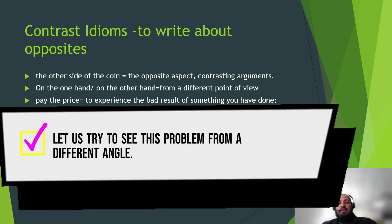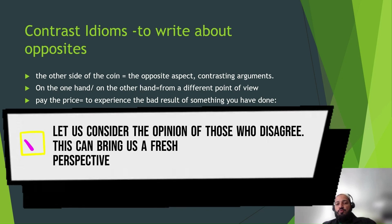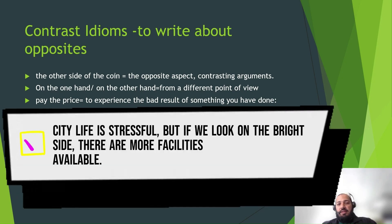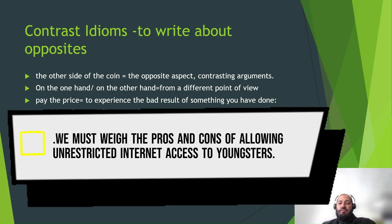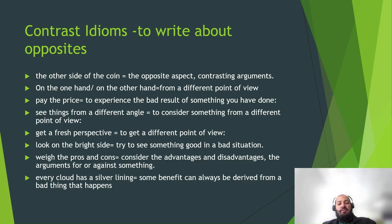'See things from a different angle' means to consider a different point of view — 'let us try to see this problem from a different angle.' Related is 'get a fresh perspective' — for example: 'Let us consider the opinion of those who disagree; this can bring us a fresh perspective.' Then 'look on the bright side' means to try to see something good in a bad situation. For example: 'City life is stressful, but if we look on the bright side, there are more facilities available.' And 'weigh the pros and cons' means to consider advantages and disadvantages: 'You must weigh the pros and cons of allowing unrestricted internet access to your kids.'